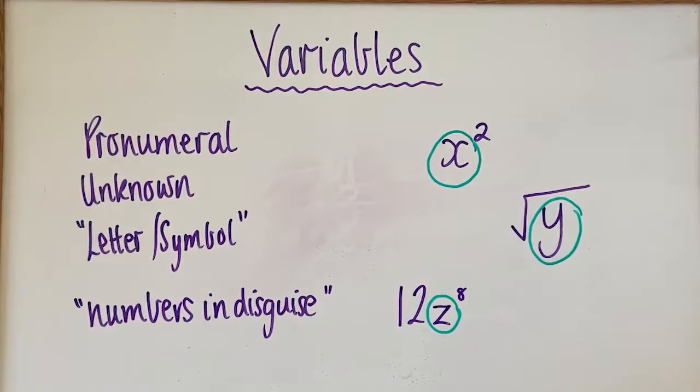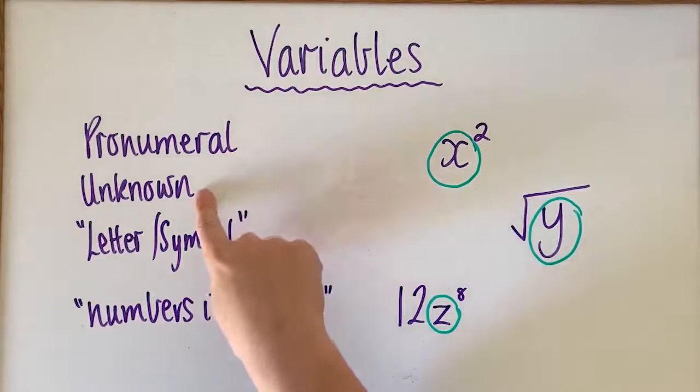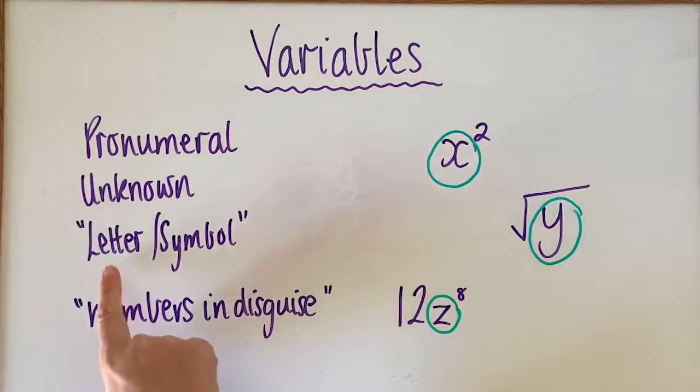As a reminder, variables are often called a pronumeral or an unknown value. They're usually represented by a letter or a symbol, and they're just numbers in disguise.